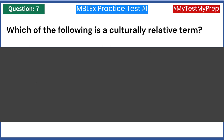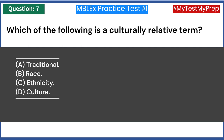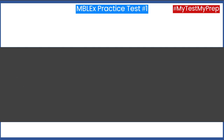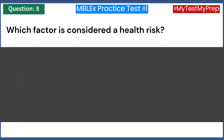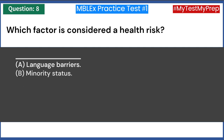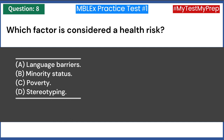Which of the following is a culturally relative term? A) Traditional. B) Race. C) Ethnicity. D) Culture. Answer: D — culture. Which factor is considered a health risk? A) Language barriers. B) Minority status. C) Poverty. D) Stereotyping. Answer: C — poverty.